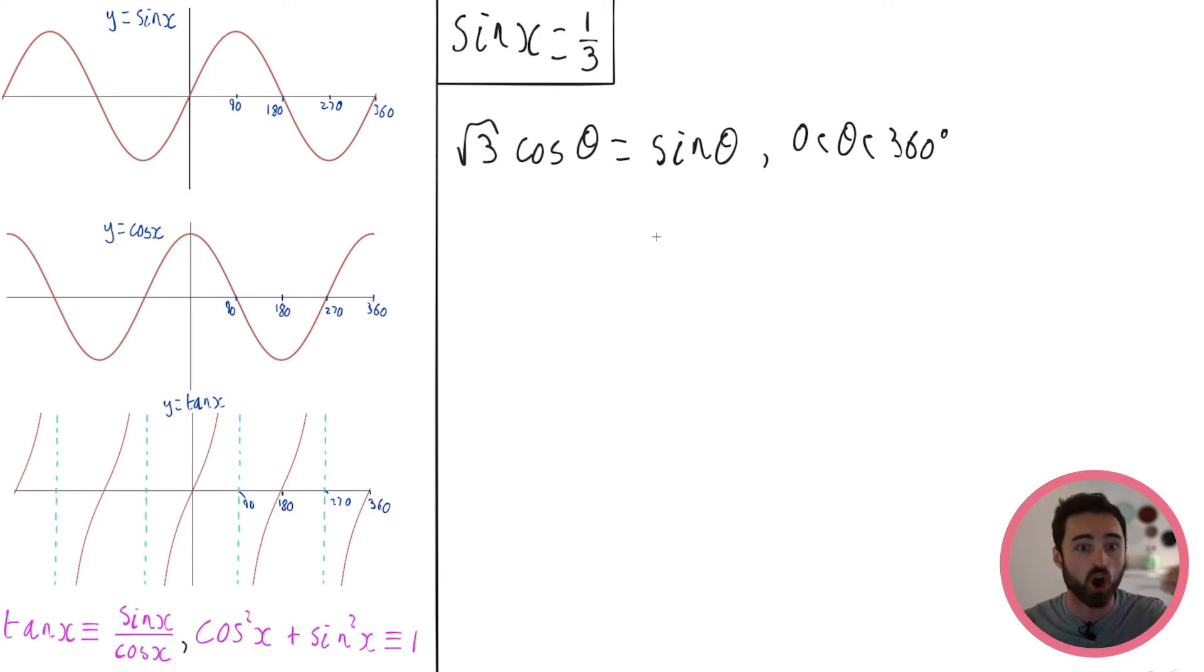The first thing that I want you to just know like the back of your hand are the graphs of the three main trigonometric functions. So sine x, cos x and tan x. These graphs kind of actually go on forever right. I've cut them off obviously because I've not got infinite space on this whiteboard but they go on forever.